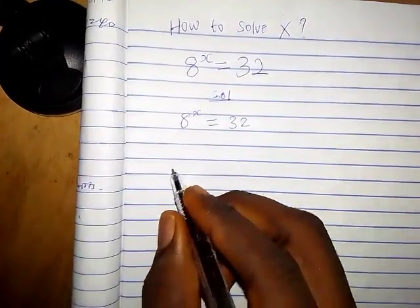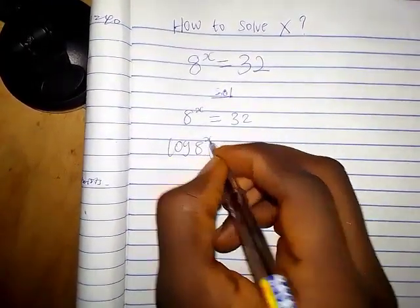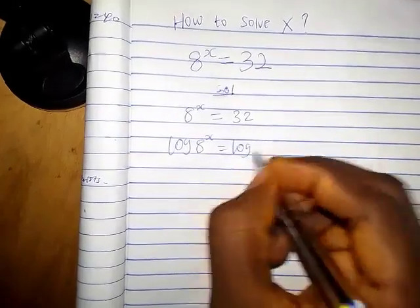Let's take the logarithm of both sides. We have log of 8 raised to the power x equals logarithm of 32.